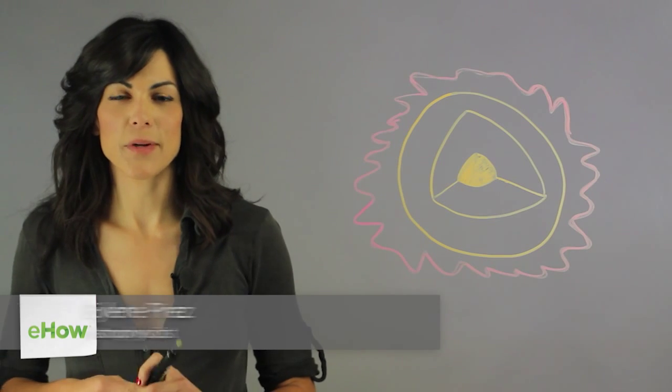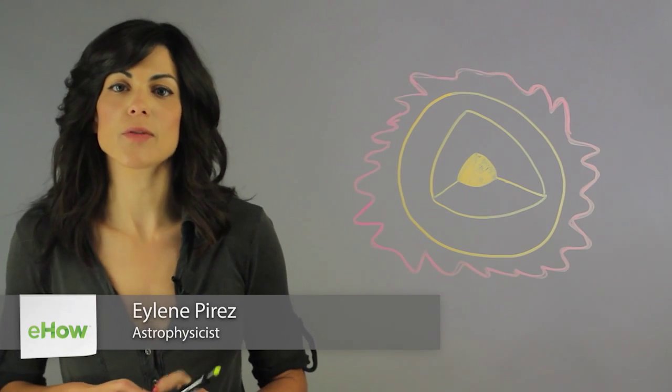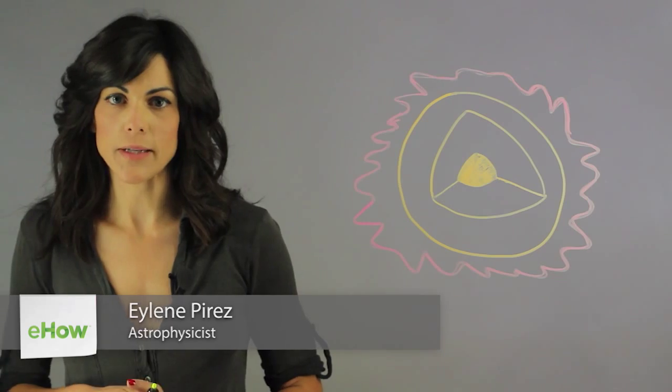Hi, my name is Aileen Perez. I'm an astrophysicist and this is the layer of the Sun that emits visible light.